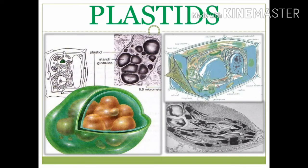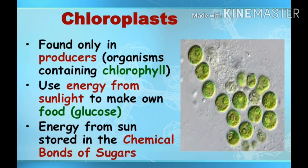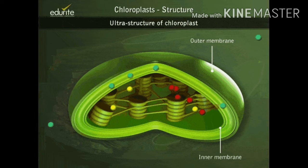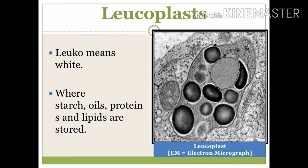Plastids. They are disc-shaped structures present only in plant cells. They can be of three types: chloroplasts, chromoplasts and leucoplasts. Chloroplasts. Plastids with green-colored photosynthetic pigment chlorophyll are called chloroplasts. They are also called as the kitchen of the plant cell. Chromoplasts. Plastids with pigments other than the color green are called chromoplasts. Leucoplasts. They are colorless plastids that vary in various shapes. They store food materials such as starch, proteins and fat.